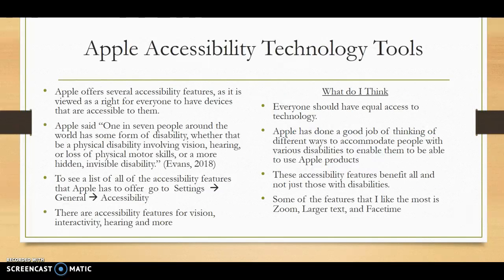Apple has a lot of accessibility tools and features. Apple stated that one in seven people around the world have some form of disability — whether that be a physical disability involving vision, hearing, or loss of physical motor skills, or even a hidden invisible disability. Apple really did a great job creating features to help people with disabilities, offering accessibility features for vision, interactivity, hearing, and more. Everyone should have equal access to technology, and Apple is doing a great job of that.